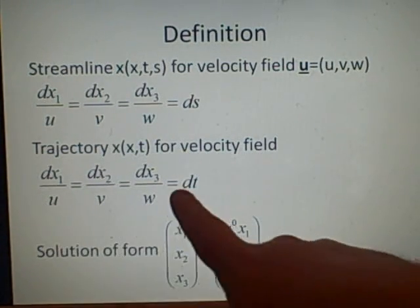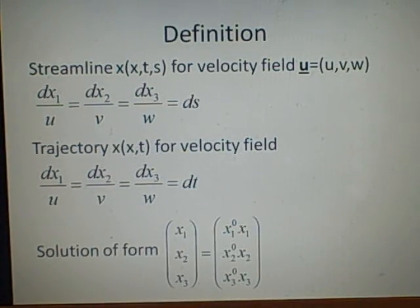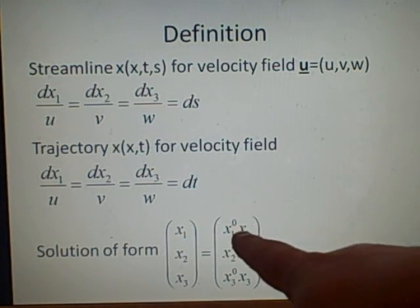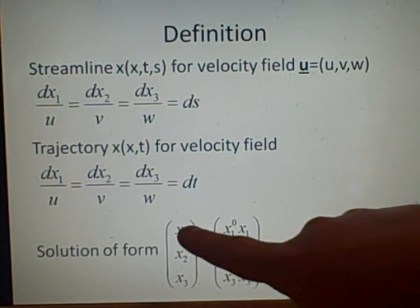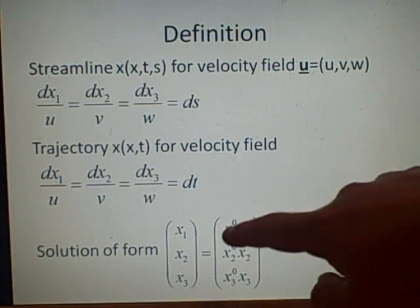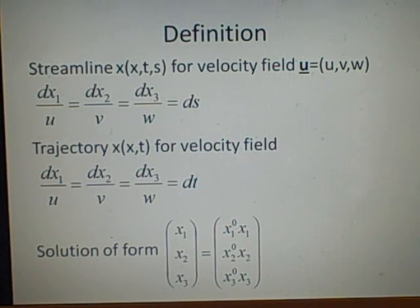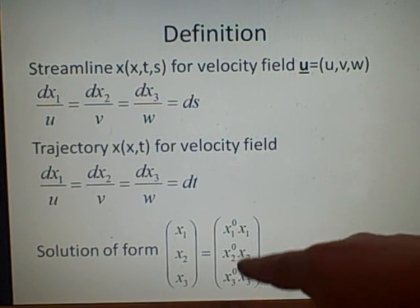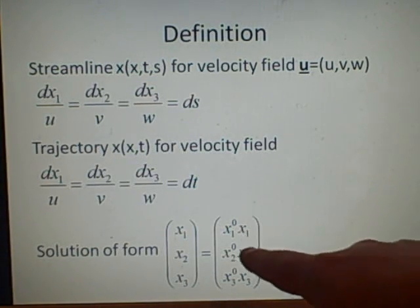The trajectory is to do with the velocity field again here, just the same but with a dt on the end. When you want to find the solution, you want to find the streamline of the function or the trajectory. I do it in this form here which is to say x₁, x₂, x₃ equals—these are the initial conditions, so you'll have some initial properties.